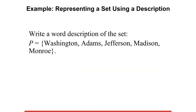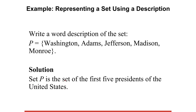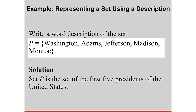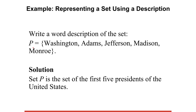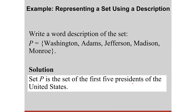Let's look at an example of representing a set using a description. Write a word description of the set P = {Washington, Adams, Jefferson, Madison, Monroe}. You would find connections among all five names and notice that these are the surnames of the first five presidents of the United States. So we can write P as 'the set of the first five presidents of the United States' using the word description method.